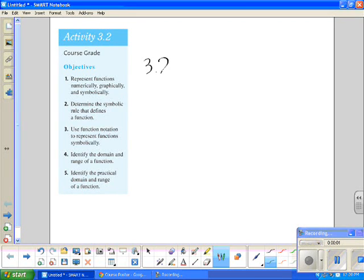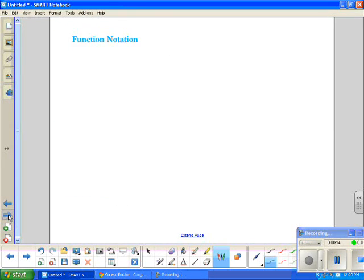We're going to look at section 3.2, which the objectives are listed on the side here. 3.2 is going to go in a little bit of a different direction than 3.1. We're not going to be talking as much about graphs, but we're going to start by talking about function notation, which is a way of writing a symbolic rule.